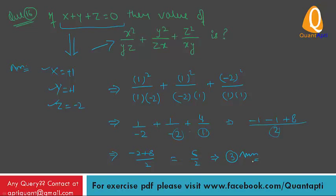So, when you have a plus b plus c is equal to 0, or x plus y plus z is equal to 0, this form of question — you can consider x equal to 1, y equal to 1, and z equal to minus 2 as the short trick.